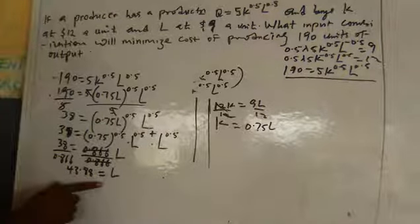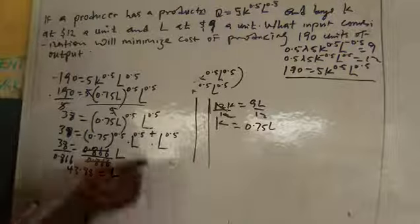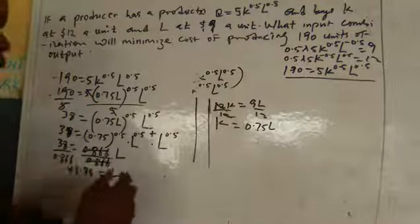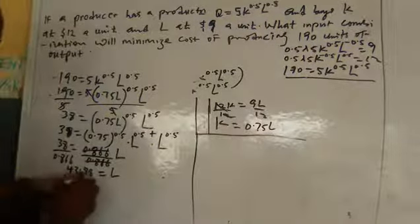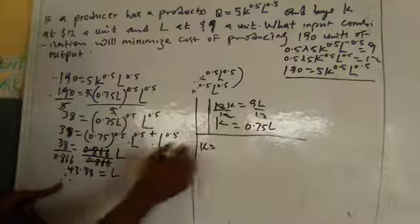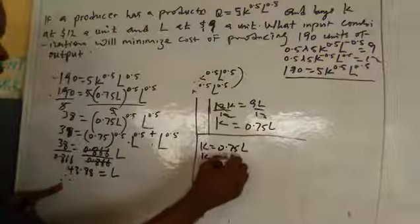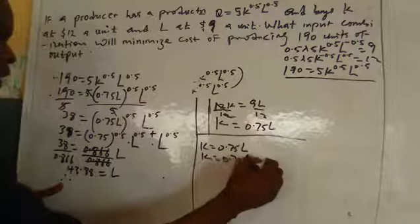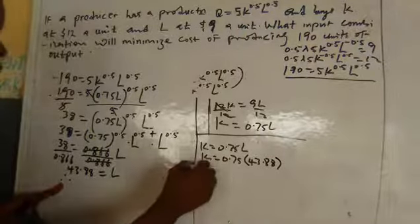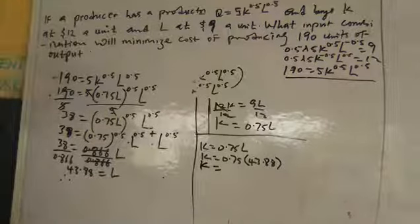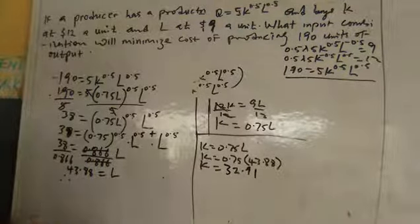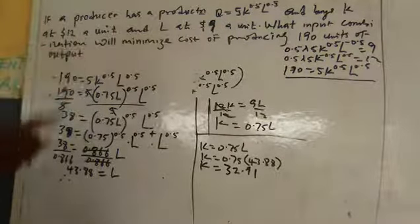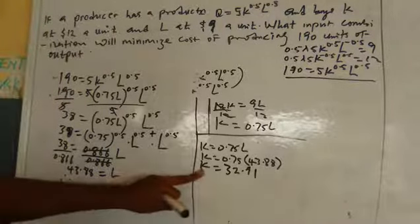Now that we have L ≈ 43.88, we can find K. Recall that K = 0.75L, so K = 0.75 × 43.88 ≈ 32.91. Therefore, the optimal input combination to minimize cost while producing 190 units is approximately 43.88 units of labor and 32.91 units of capital.